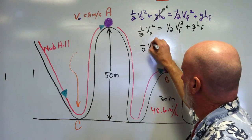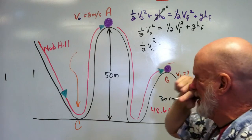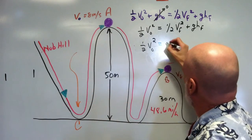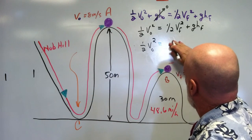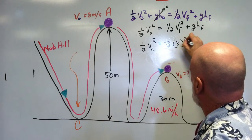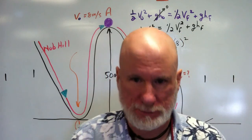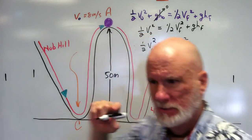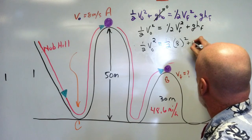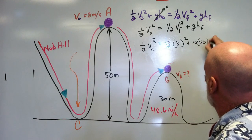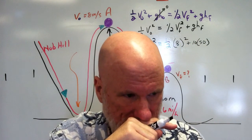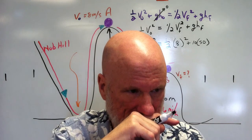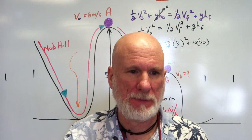So ½V₀² equals... how fast is it going here? Eight meters per second. One-half, 8 squared is 532. Then 10 times 50, right? Is that right? 8² is 64, so 32 plus... What I'm saying is, isn't that 10 times 50? It is.